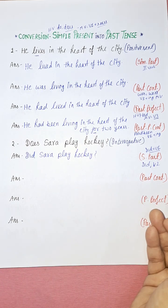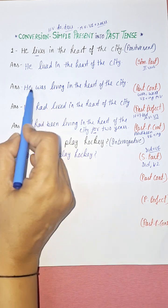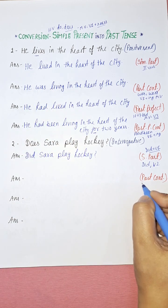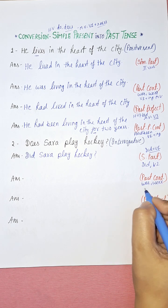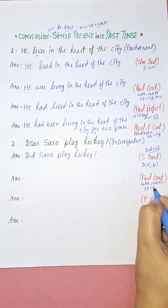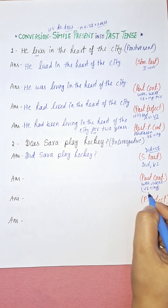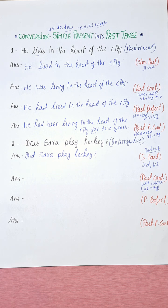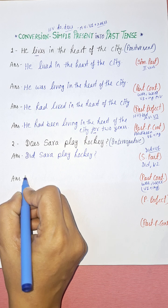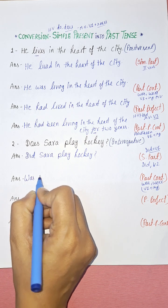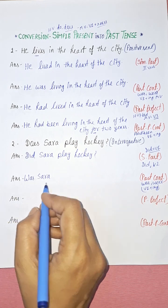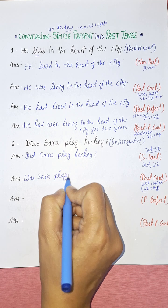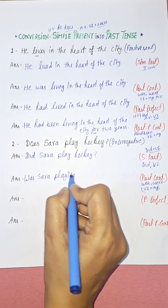Now past continuous. The helping verbs are 'was' and 'were', and as a main verb we use the present participle form — V1 plus -ing. V3 form is also known as past participle form. So 'does Sarah play hockey?' converts to 'Was Sarah playing hockey?'